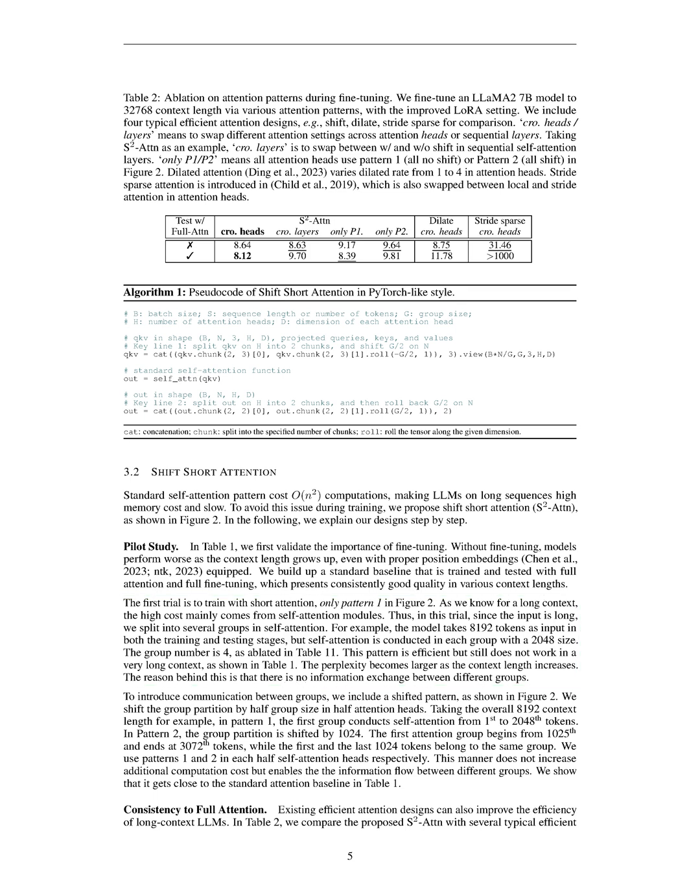Long context language models are typically pre-trained with a fixed context length, making it expensive to train them from scratch with long contexts. Recent works have explored extending the context length through fine-tuning, but these methods are computationally expensive. Our method, called shift short attention S²ATTN, efficiently extends the context length by introducing communication between different groups of tokens, achieving comparable performance to the standard baseline while reducing computation cost.